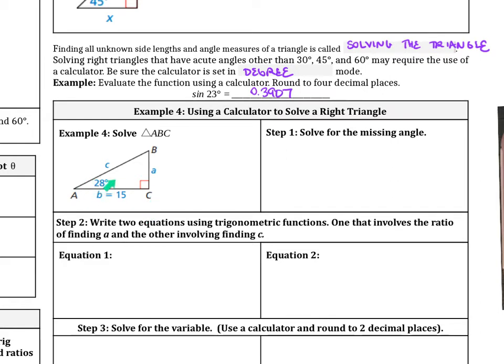Now we're going to find all unknown side lengths and angle measures of a triangle when it isn't the special right triangles. For example, we see 28 degrees here, so in this case we need to use a calculator. Finding all unknown side lengths and angle measures of a triangle is called solving the triangle. Solving right triangles that have acute angles other than 30, 45, and 60 may require the use of a calculator. We need to make sure that the calculator is set in degree mode.